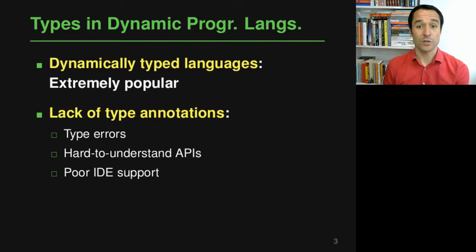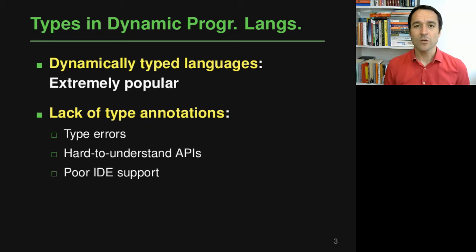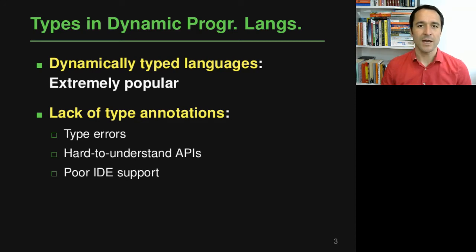Let me start by saying something about the motivation for this work. Dynamically typed languages have become extremely popular — languages like Python and JavaScript are used all over the place and a lot of important software is written in them. These languages are dynamically typed, meaning developers do not have to write type annotations for variables and functions; instead, types are known at runtime only and are not known statically just by looking at the source code.